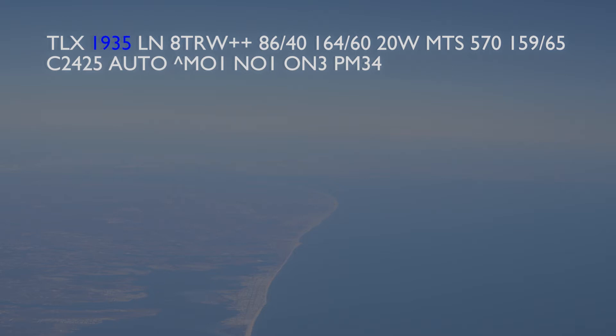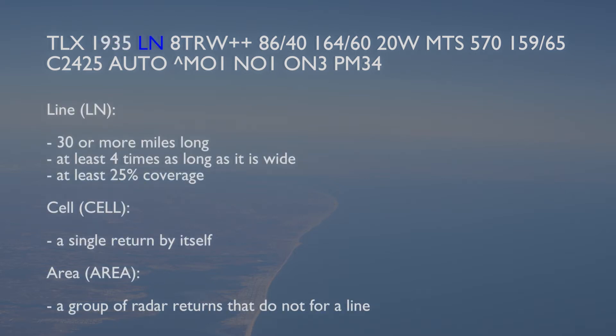Following the time, the configuration of the radar returns will be stated. In this example, the weather is a line. A line describes weather which is 30 or more miles long and is at least four times as long as it is wide, with radar returns covering at least 25% of the area within the line. Weather may also be described as being a cell, which is a single echo by itself, or an area when a group of radar returns exists but does not form a line.